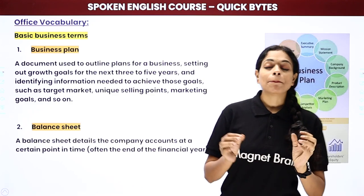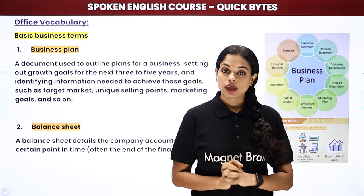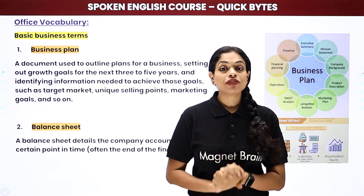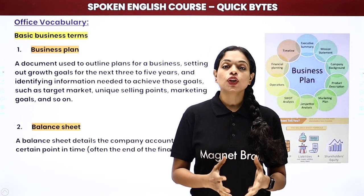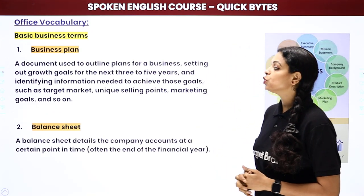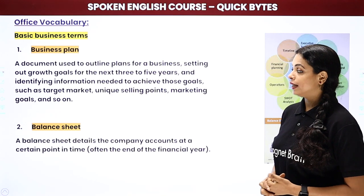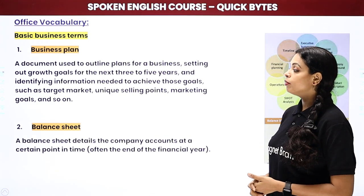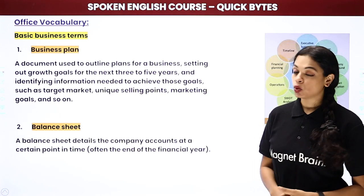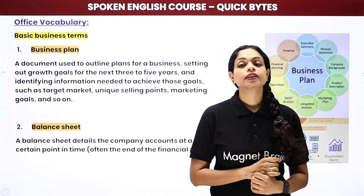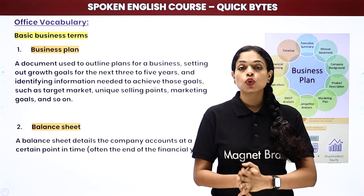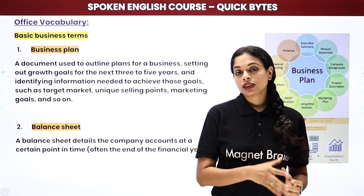Now let's come to some basic business terms used in office vocabulary. First is a business plan. Whenever you have a business, you need to have a plan — what do you want to be, what's your five-year goal, one-year goal? A business plan is a document used to outline plans for a business, setting out growth goals for the next three to five years, identifying the target market, unique selling points, and marketing goals. It contains all information related to your business and who your customers are.